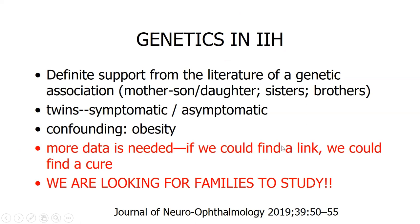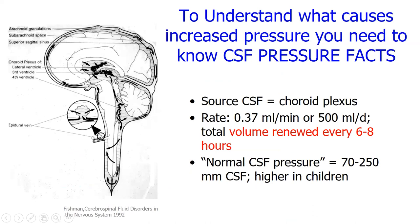In terms of genetics, we have many examples in the literature of mothers, sons, daughters, sisters, and brothers with the disorder, as well as symptomatic twins. I had one case where a twin came in with symptoms and the sister sitting in the room had it too — they genetically had it at the same time. More data is needed. We have studies here at Moran Eye Center looking for affected families, so if you have family members with this disorder, we'd love to hear from you.